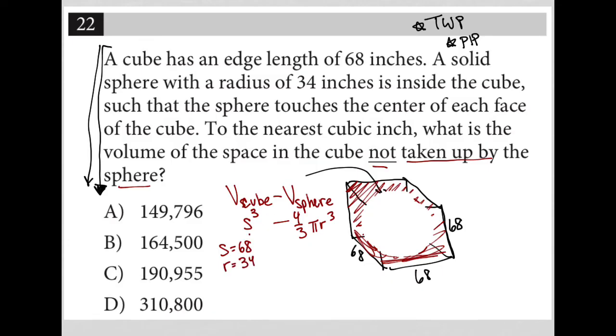So all we're doing now is plugging this information into this situation here. So we have S cubed, so 68 to the third power, minus four thirds pi, 34 cubed. You'll have an integrated calculator for your digital test. Here I'm going to use my regular calculator here. So 68 cubed is equal to 314,432. And then I'm going to do some math here, 34 cubed.